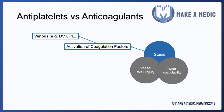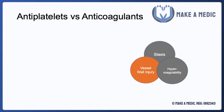It can also lead to clots within the heart, such as in AF. So essentially, to prevent this from happening in conditions where stasis is the main underlying driver of thrombosis, you use anticoagulants — so that may include low molecular weight heparins or DOACs.